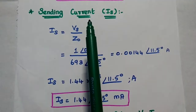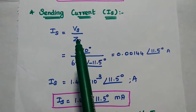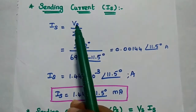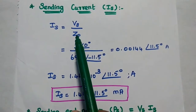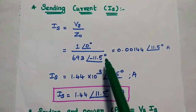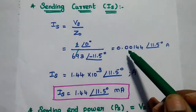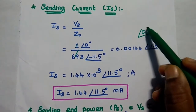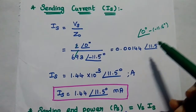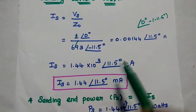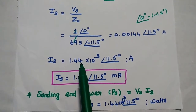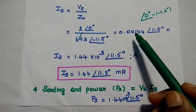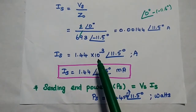Next, we find the sending end current IS. Since the line is terminated in the characteristic impedance, IS equals VS / Z₀. VS is 1 volt at angle 0 degrees, and Z₀ is 693 at angle minus 11.5 degrees. Dividing gives 0.00144 at angle 0 − (−11.5) = plus 11.5 degrees, which can also be written as 1.44 × 10⁻³ amperes at angle 11.5 degrees, or 1.44 milliamps.